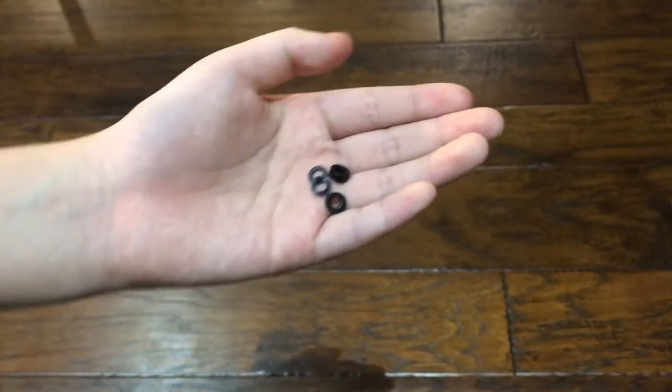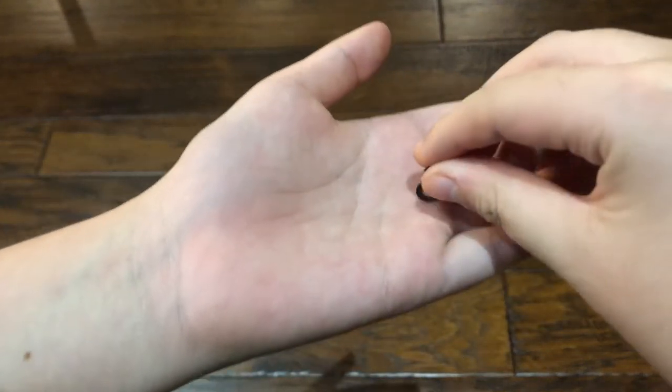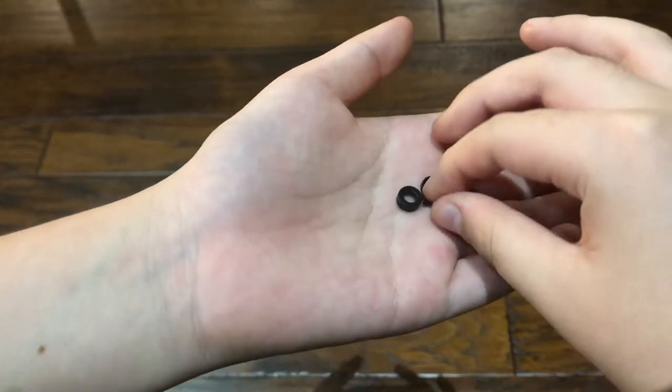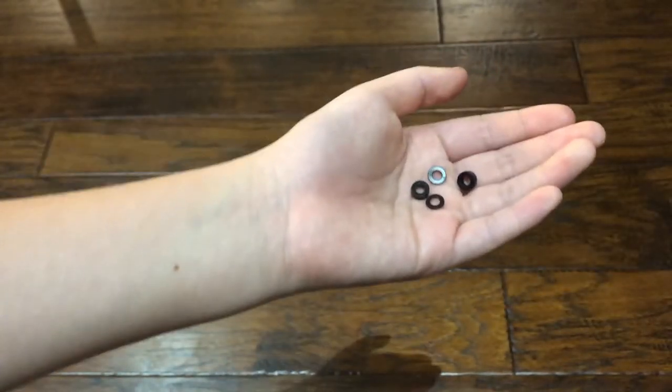These are spacers. So what a spacer does is it puts distance between a beam and distance between a beam and let's just say a gear.